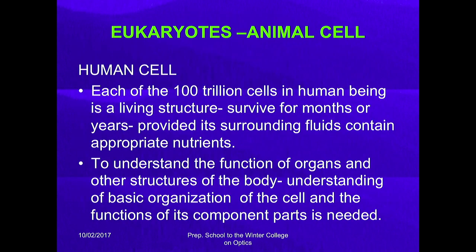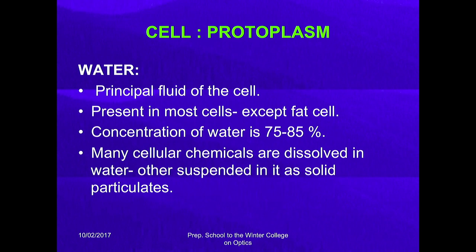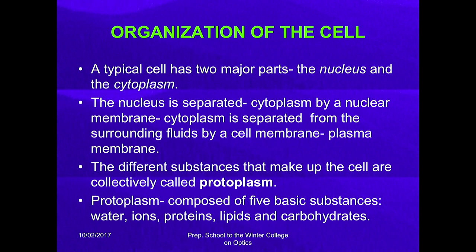Each of the 100 trillion cells in a human being is a living structure and can survive for months or years provided the surrounding fluid contains appropriate nutrients. A typical cell has two major parts: the nucleus and the cytoplasm. The nucleus is separated from the cytoplasm by a nuclear membrane, and the cytoplasm is separated from the surrounding environment by the plasma membrane. The different substances that make up the cell are collectively called protoplasm, composed of water, ions, proteins, lipids, and carbohydrates.